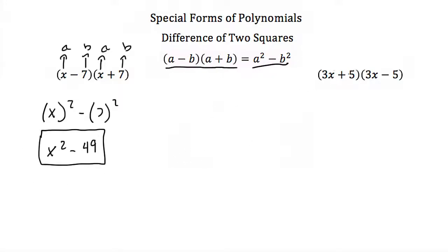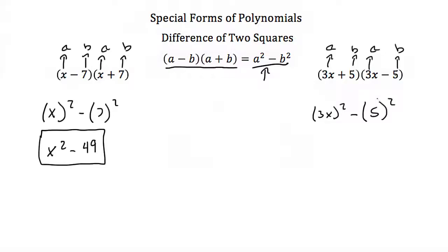Let's try one more: 3x plus 5 times 3x minus 5. Here our a is 3x and our b is 5. Plugging in: 3x squared minus 5 squared. Since 3x squared is 9x squared and 5 squared is 25, the result is 9x squared minus 25. So 3x plus 5 times 3x minus 5 equals 9x squared minus 25. That completes our tutorial on special forms of polynomials.